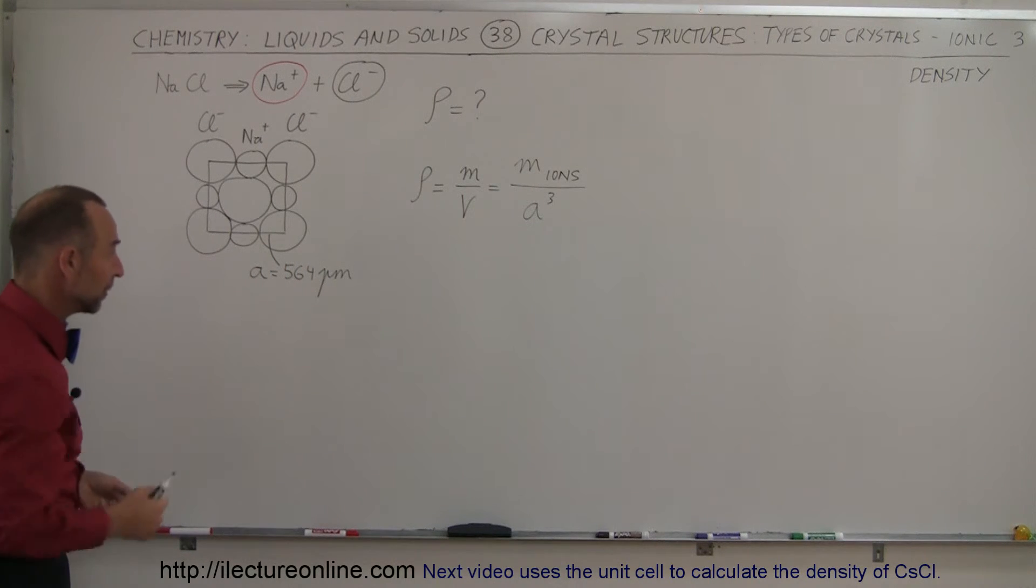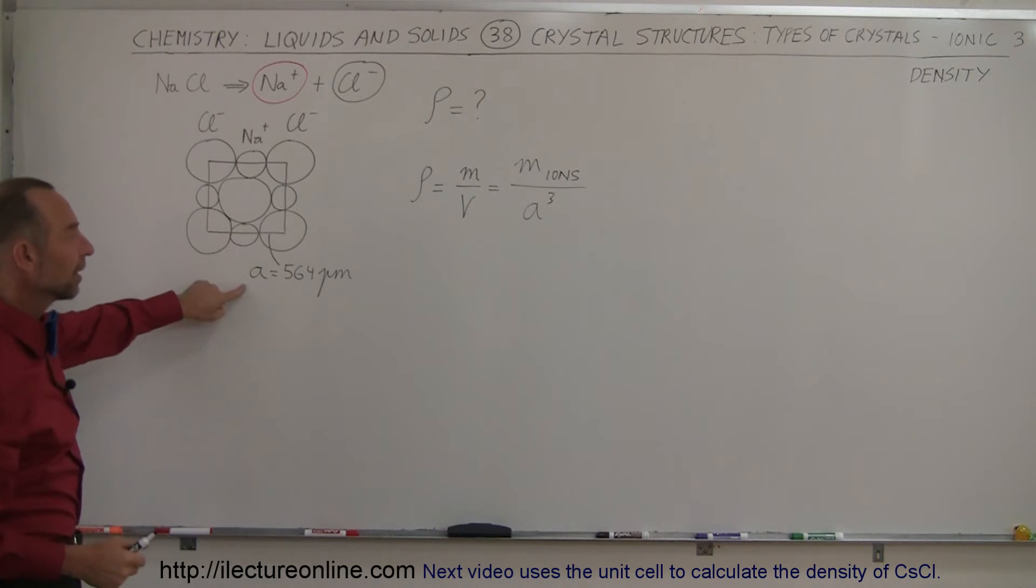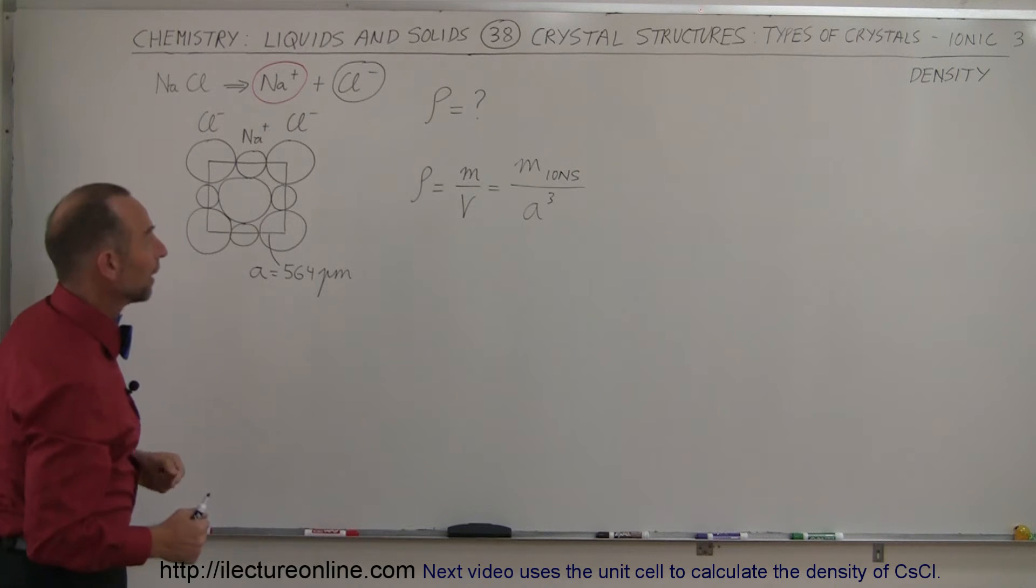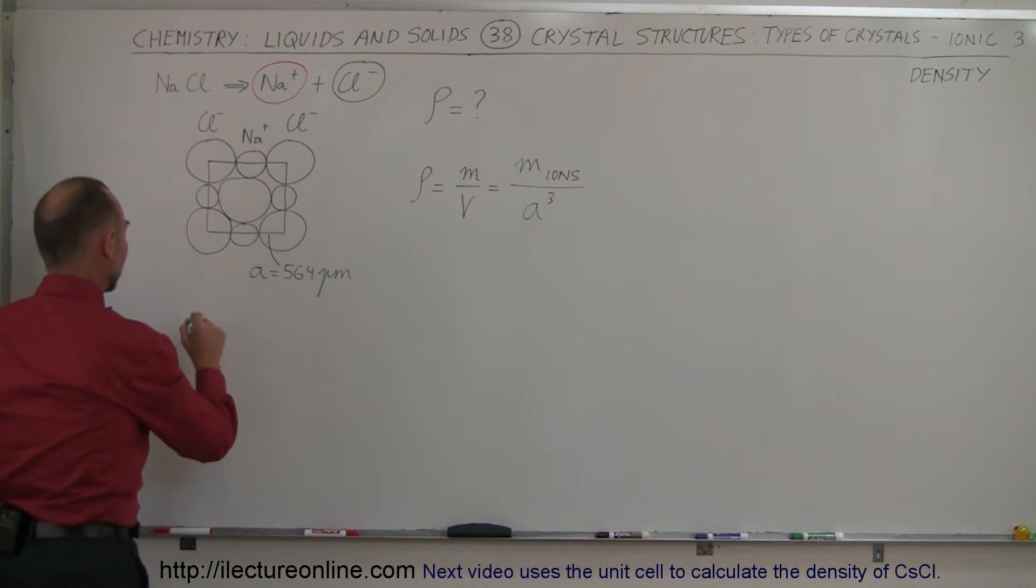But nevertheless we've been able to determine that and so we use that then in our calculation for the volume of the unit cell. Now we need to find out what the mass is for the ions.